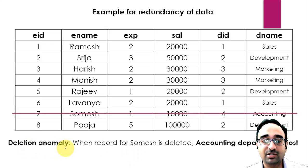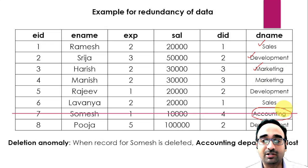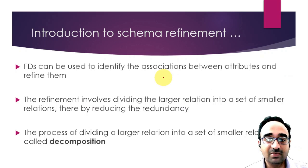The last anomaly is the deletion anomaly. If we remove record number 7 belonging to Shyamlesh, who is the only person in the accounting department and has left the company, and then we list all departments, we only get sales, development, and marketing — accounting is gone. The information regarding the accounting department is completely lost. This is called a deletion anomaly.